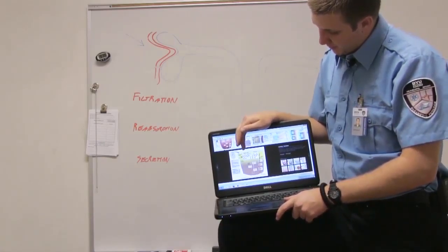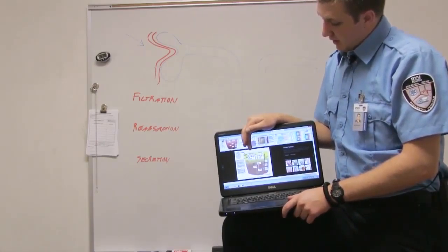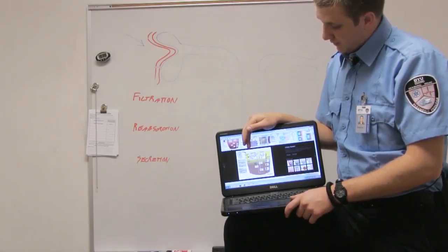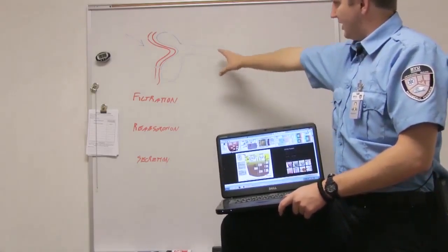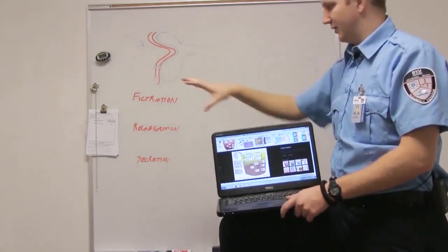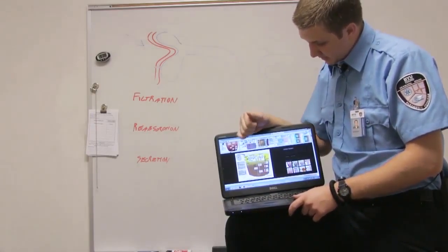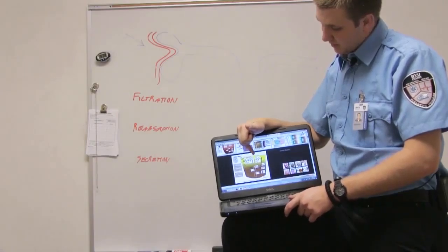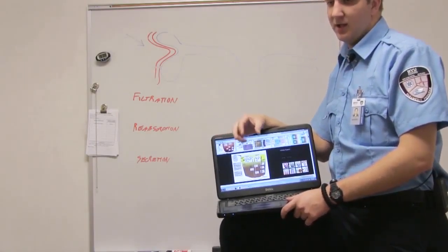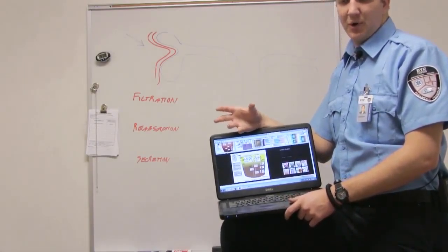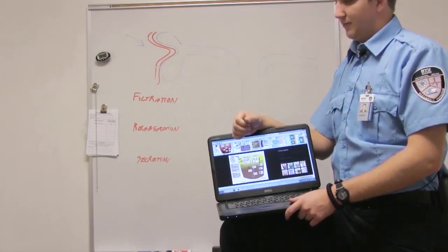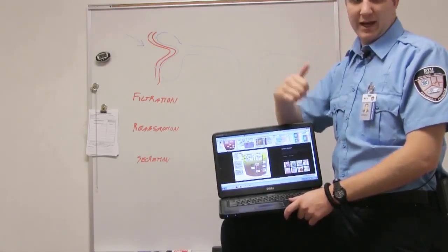So here in the proximal tubule, all that filtrate is now inside the nephron, this whole thing we call a nephron. So then we're going to take our sodium, amino acids, and glucose - basically the solutes that we want - and we're going to pass them through and put them back into the blood.